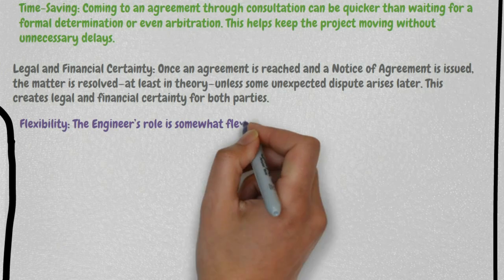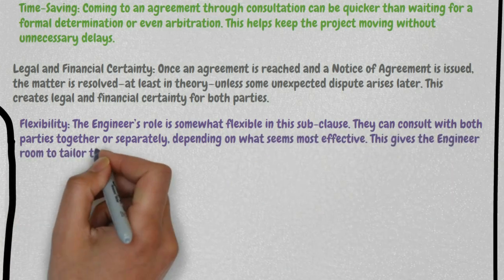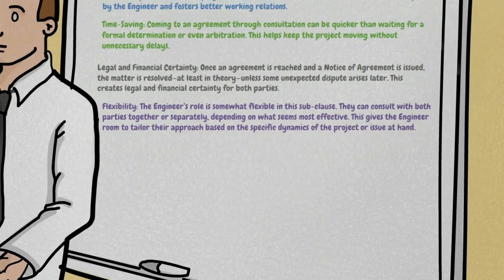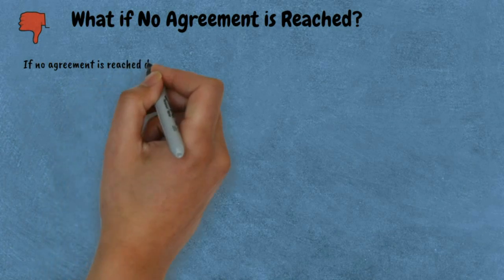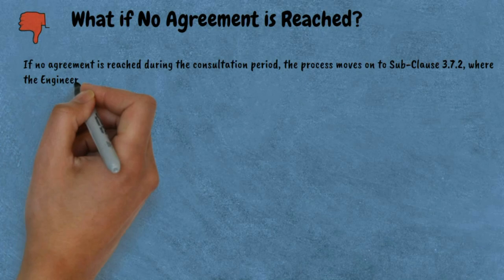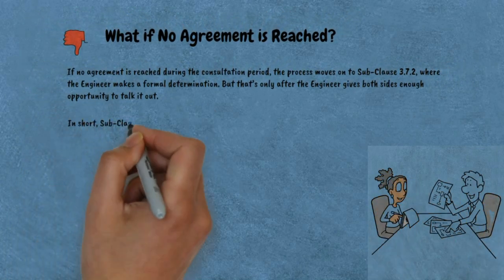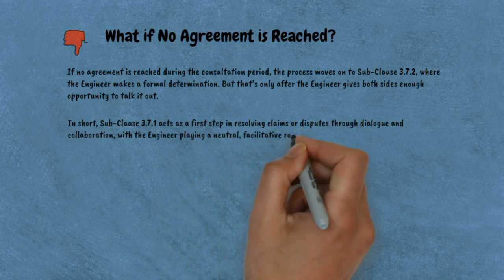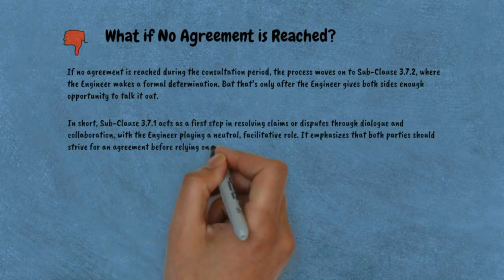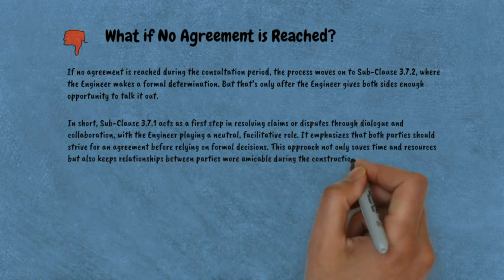Fourth, flexibility — the engineer's role is somewhat flexible in this sub-clause. They can consult with both parties together or separately, depending on what seems most effective, giving the engineer room to tailor their approach based on the specific dynamics of the project. If no agreement is reached during the consultation period, the process moves on to Sub-clause 3.7.2, where the engineer makes a formal determination, but only after the engineer gives both sides enough opportunity to talk it out. Sub-clause 3.7.1 acts as a first step in resolving claims or disputes through dialogue and collaboration, with the engineer playing a neutral, facilitative role, emphasizing that both parties should strive for an agreement before relying on formal decisions.